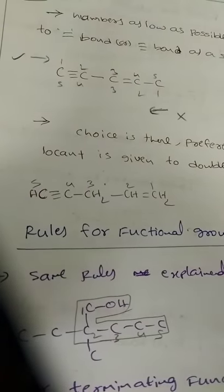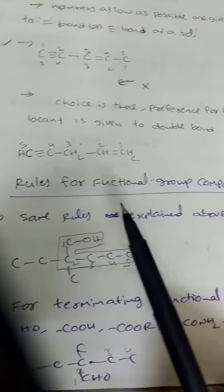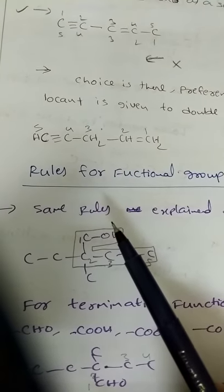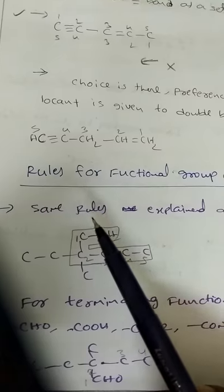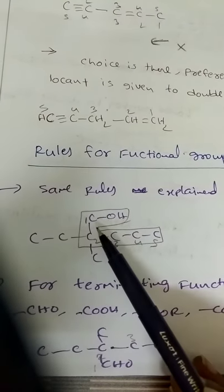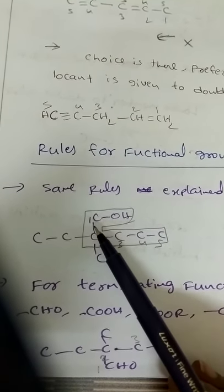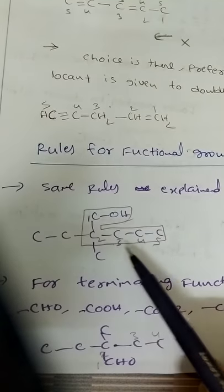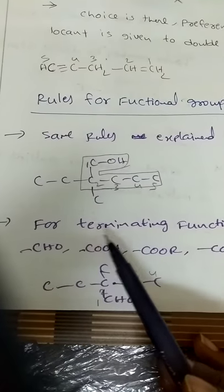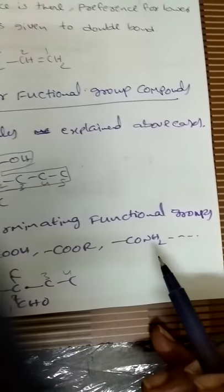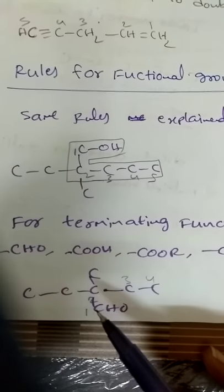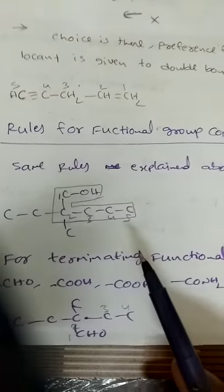Next are the rules for functional group compounds. The same general rules apply, but the functional group must be included in the parent chain with the highest priority — meaning it gets number 1. For terminating functional groups like -CHO, -COOH, -COR, -CONH2, etc., the carbon of the functional group itself counts as carbon number 1. So this is the rule for functional groups.